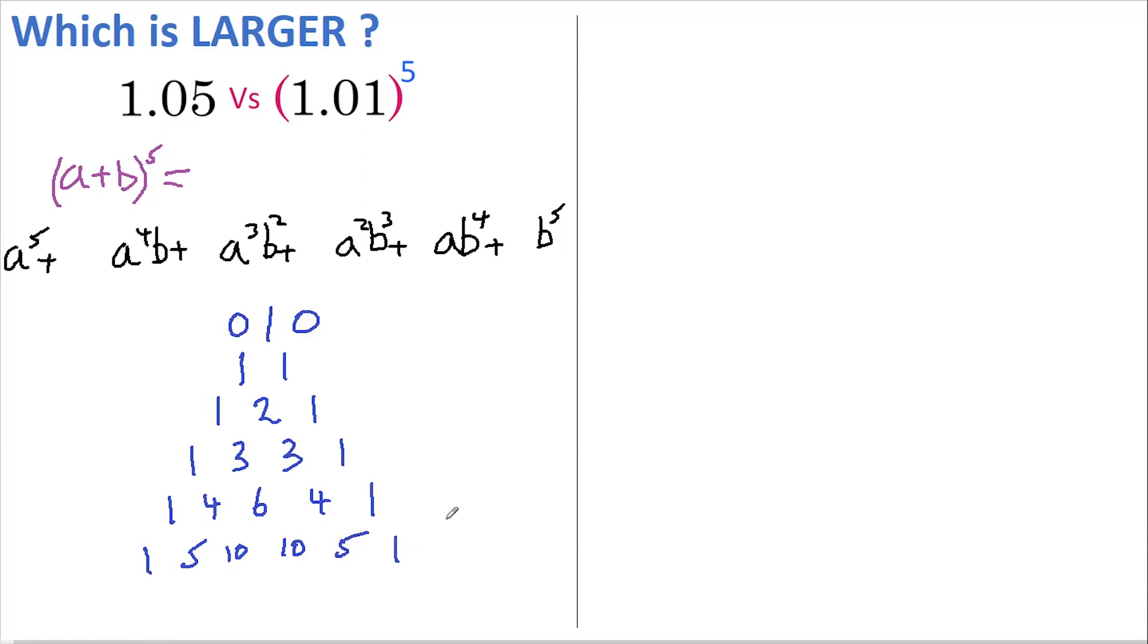And that's Pascal's triangle. It's great because if we have a binomial raised to the fifth power, we can go down to the line that contains a 5 as the second number, and that row gives us all our coefficients.